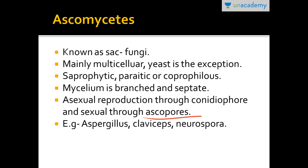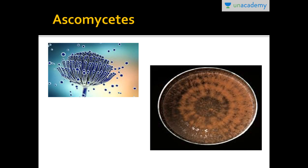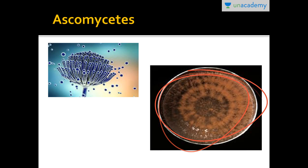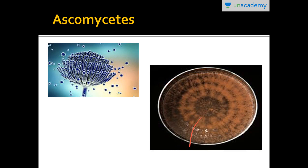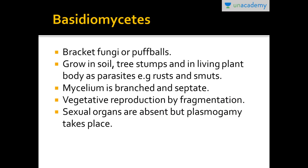Examples of Ascomycetes are Aspergillus, Claviceps, Penicillium, and Neurospora. Neurospora is known as the pink bread mold, and here is the diagram of Neurospora.